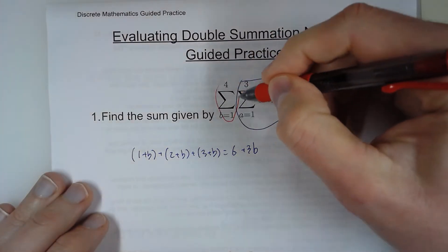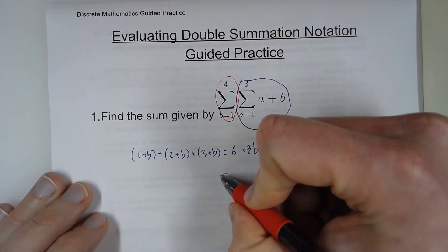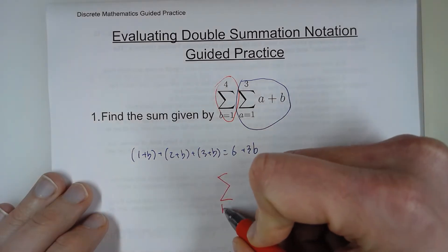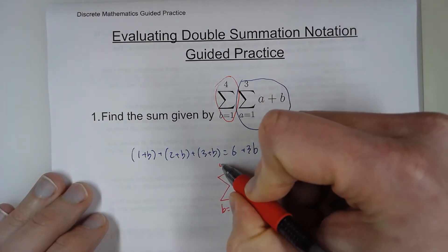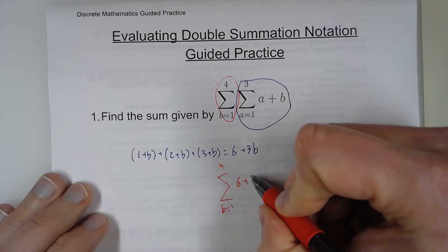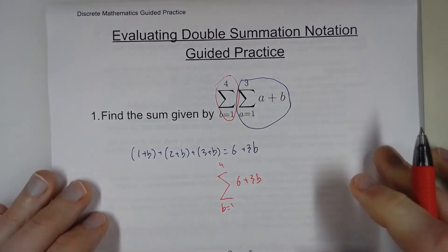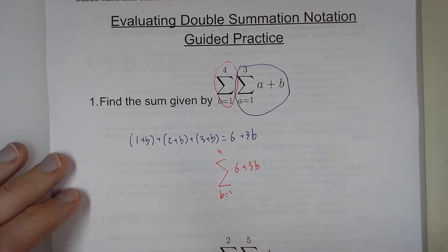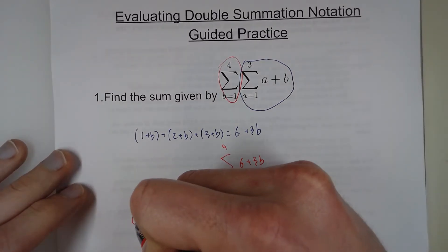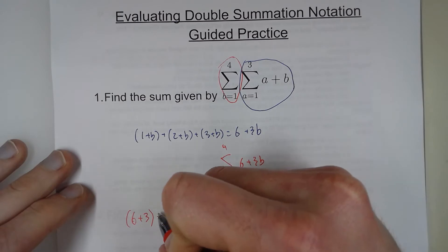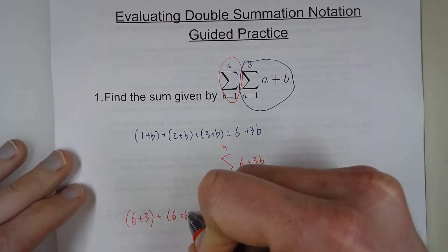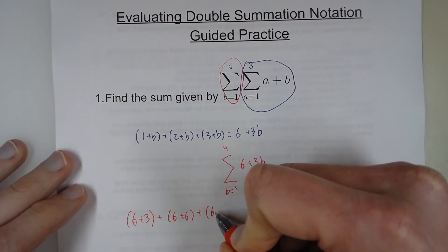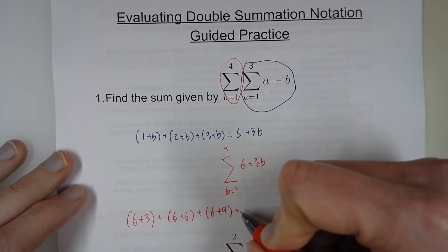But now we still have this outside sigma. So b equals 1 to 4, so 6 plus 3b. So now we're going to plug in 1, 2, 3, and 4 in for b. So 6 plus 3, 6 plus 6, 6 plus 9, and 6 plus 12.